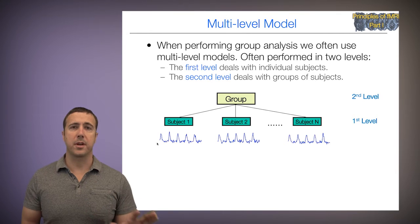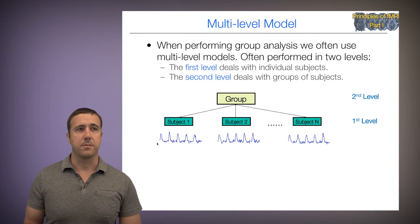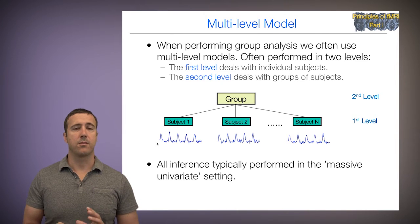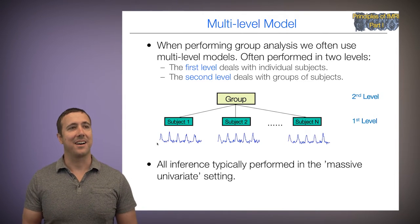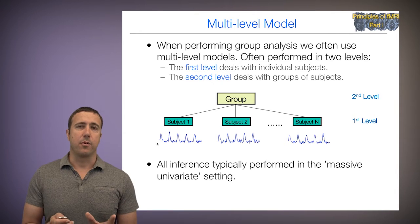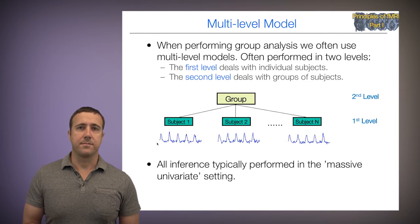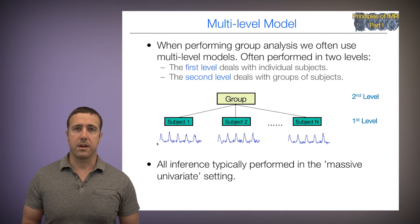Here's a depiction of the group, and within a group there are subjects. Each subject has their own time series for every voxel. We're still dealing with inferences performed in the mass univariate setting, so we're still dealing with one voxel at a time.